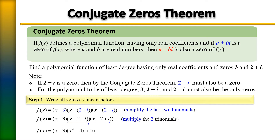Next, to simplify further, we multiply the trinomial x squared minus 4x plus 5 with the binomial x minus 3. That gives us a final answer in standard form of f(x) equals x cubed minus 7x squared plus 17x minus 15. And there you have it — the Conjugate Zero Theorem applied.